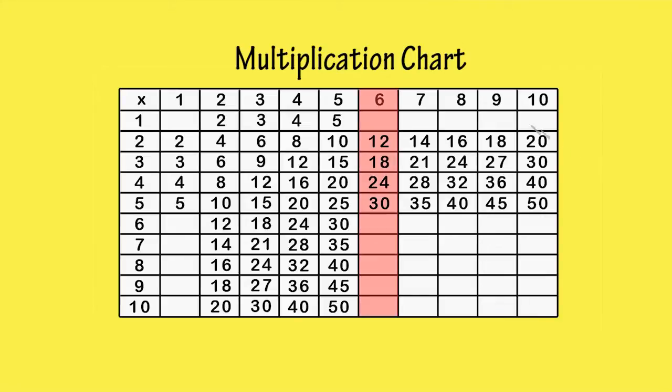We can start by filling in the blank boxes in the 6th column. 6 times 1 is 6. The next 4 boxes are already filled in from when we did the 2, 3, 4 and 5 times tables.